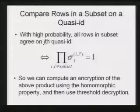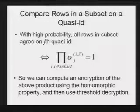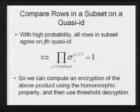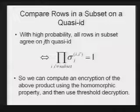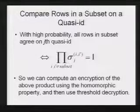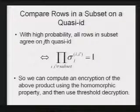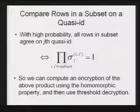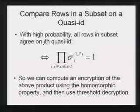Why is this true? If they all have the same values in this core ZID, then all these sigmas are equal to 1. Then clearly the product of them is also equal to 1.